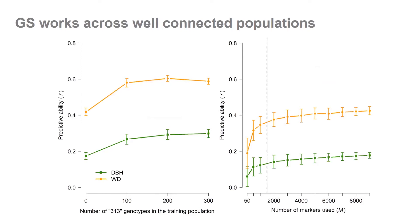To explain this graph: on the x-axis we have the number of genotypes from the cloned elites included in the training population, varying from 0 to 300. Zero means we never test anything from the new population and just make predictions based on existing populations. Even with that, we achieved predictive ability of roughly 0.2 for DBH (diameter at breast height) and just over 0.4 for density. With as few as 100 genotypes from the new population included, those numbers increased by roughly 50% — predictive ability for DBH rose to closer to 0.3 and closer to 0.6 for wood quality.